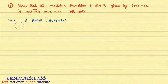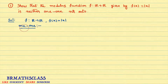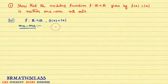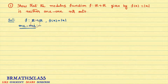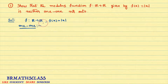First, we will check whether it is one-one or not. Remember, when the function is not one-one, you have to give a counter example. What is the definition of a one-one function? Different elements in the first set must have different images in the second set.